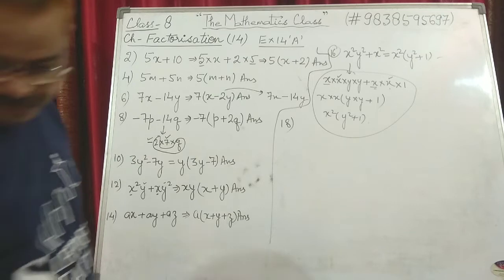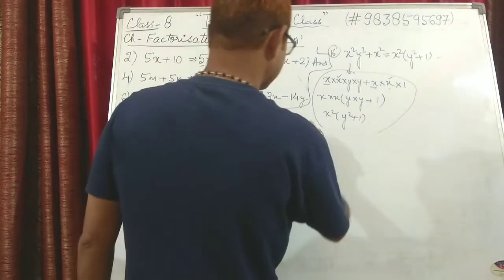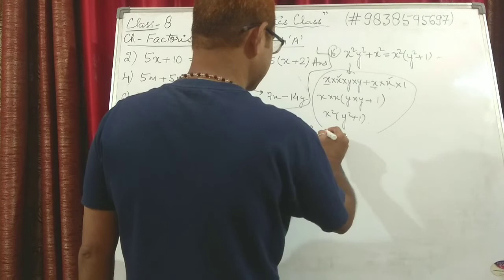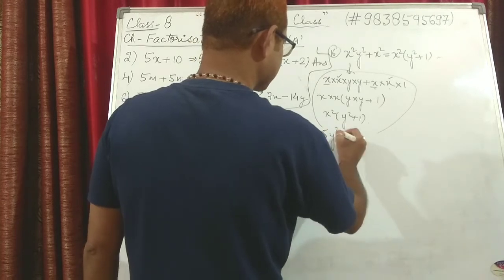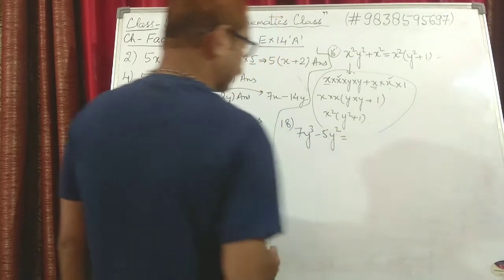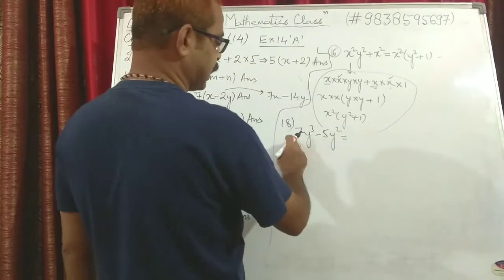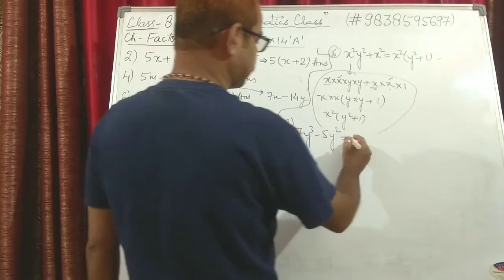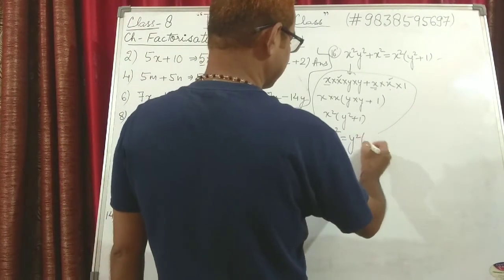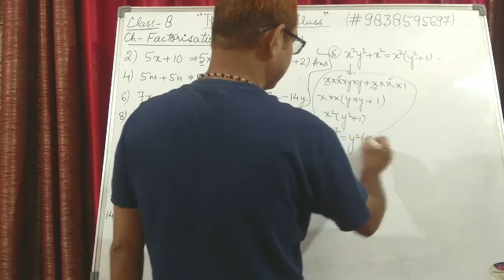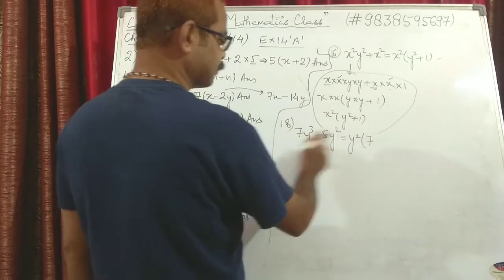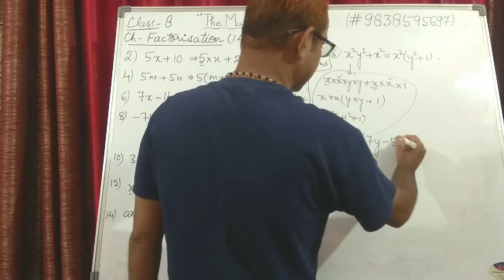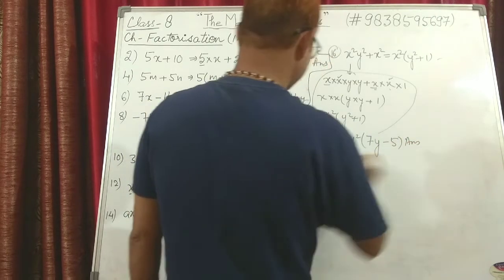Question 18: 7y³ − 5y². From these two, 7 and 5 are prime numbers so nothing numerical is common, but y² can be taken common. What is left? From the first term, since y² has been taken, 1y is left — so 7y. Then minus 5. Answer: y²(7y − 5).